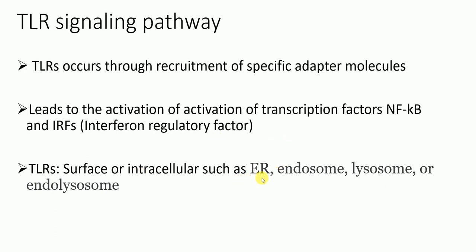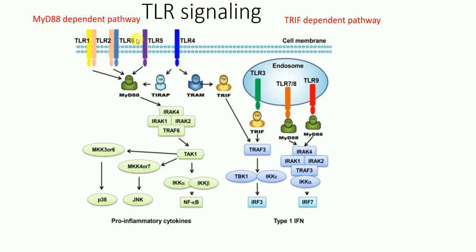Toll-like receptors have been divided into two types: surface receptors and intracellular receptors. Intracellular receptors are present in the endoplasmic reticulum, endosome, lysosome, or endolysosome. Toll-like receptors present on the cell surface include TLR1, TLR2, TLR6, TLR5, and TLR4. Those located intracellularly in the endosome include TLR3, TLR7, TLR8, and TLR9.